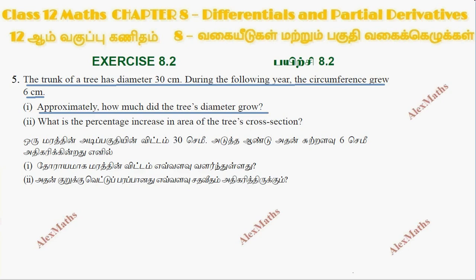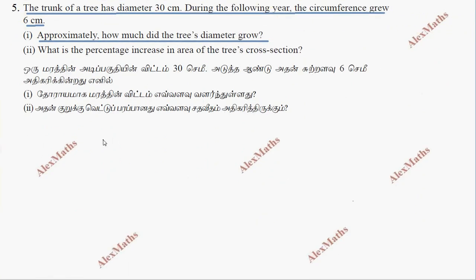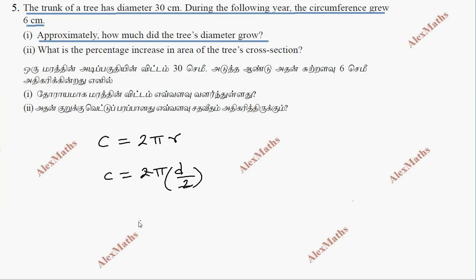The circumference formula is C equals 2πr, but we want it in terms of diameter. The diameter divided by 2 gives the radius, so the 2s cancel out, giving us C equals πd. Now we take the differential of the circumference.